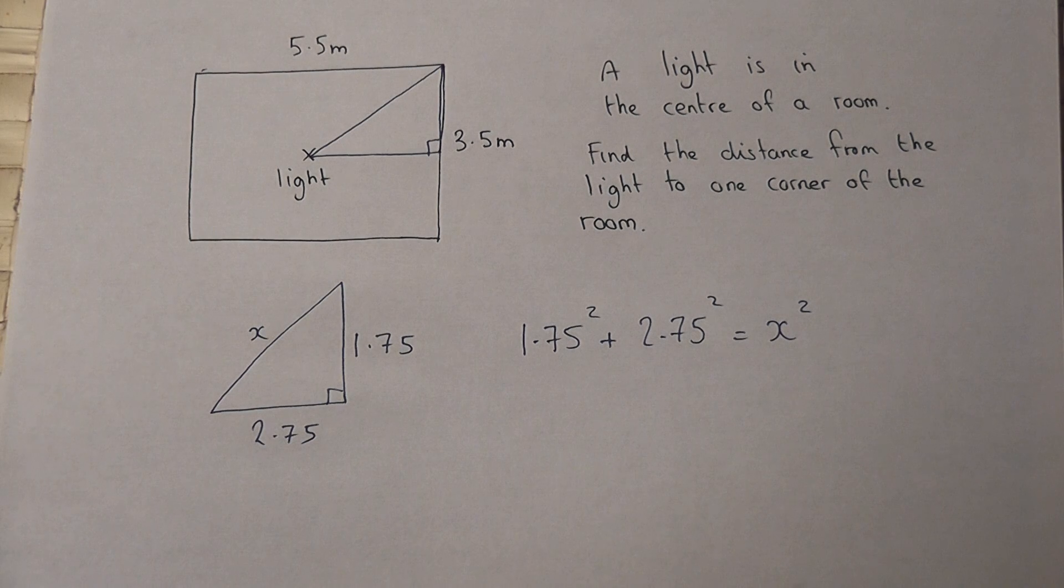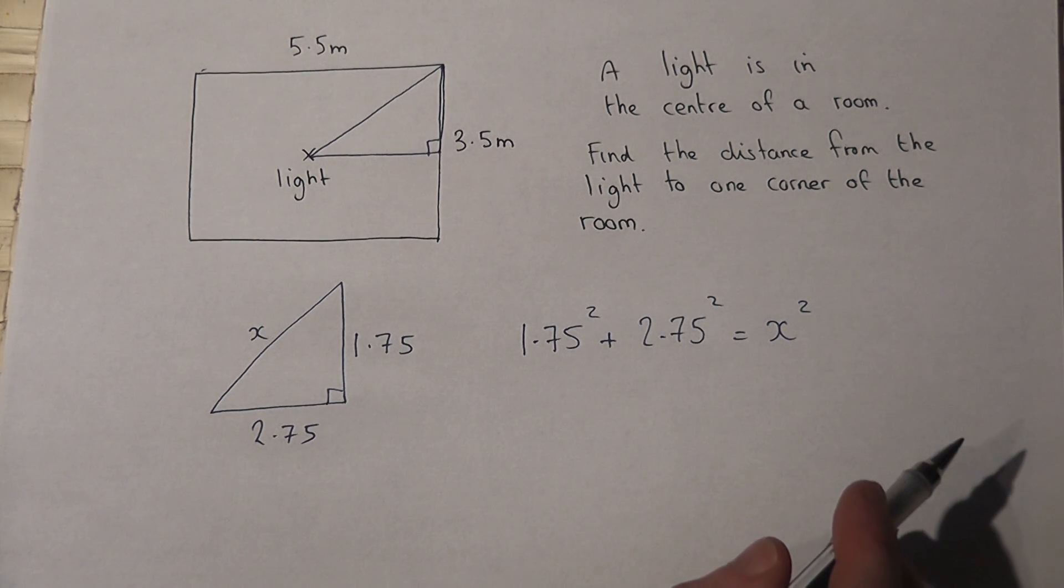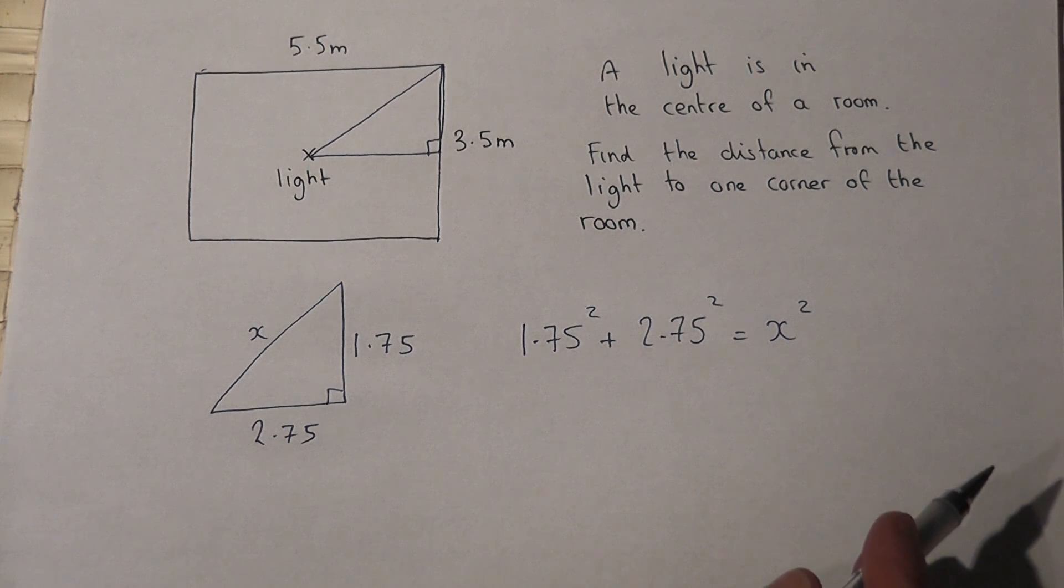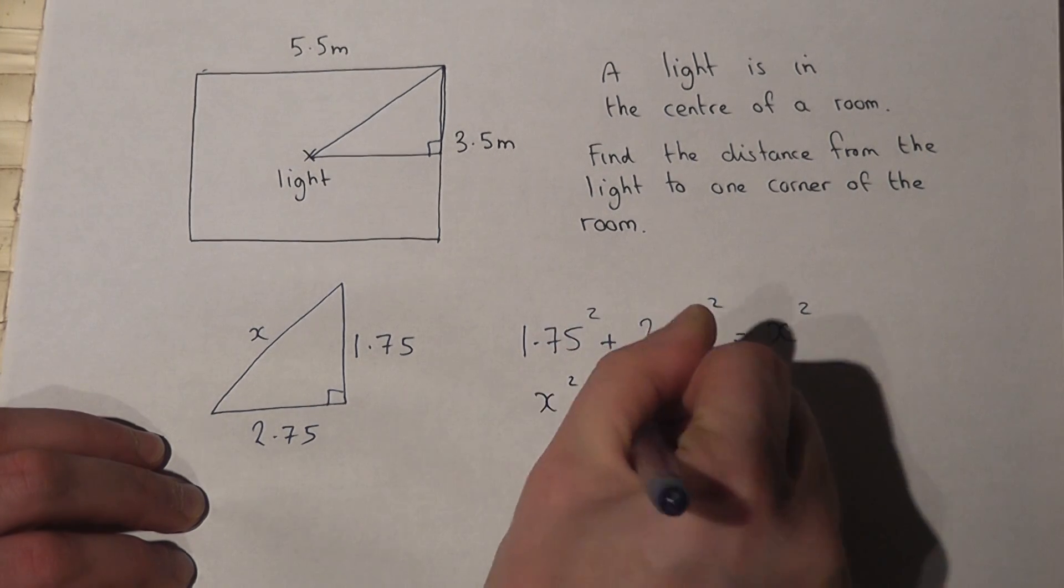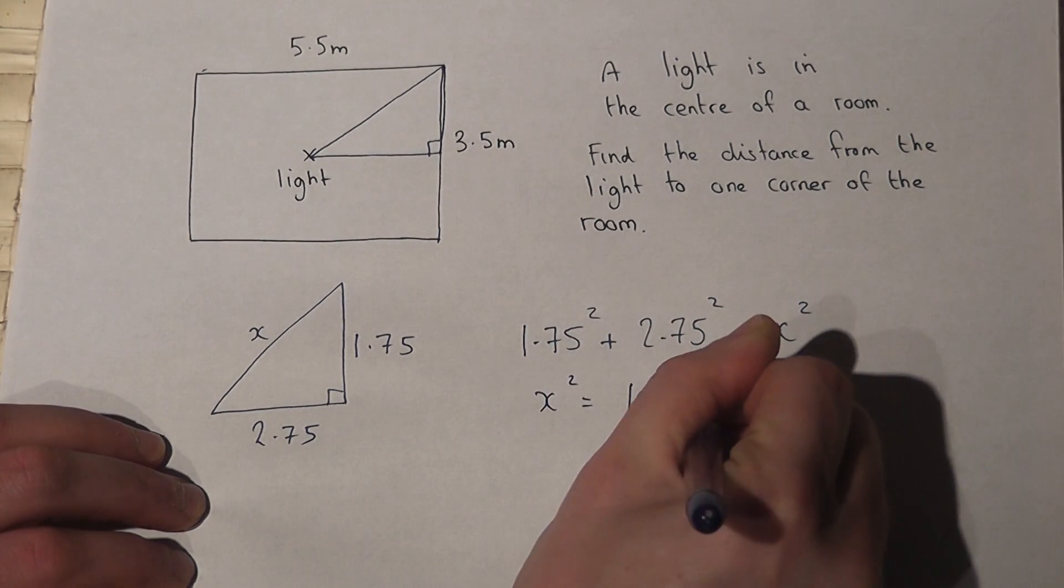So if I enter this into a calculator, 1.75 squared plus 2.75 squared, then I get x squared to equal 10.625.